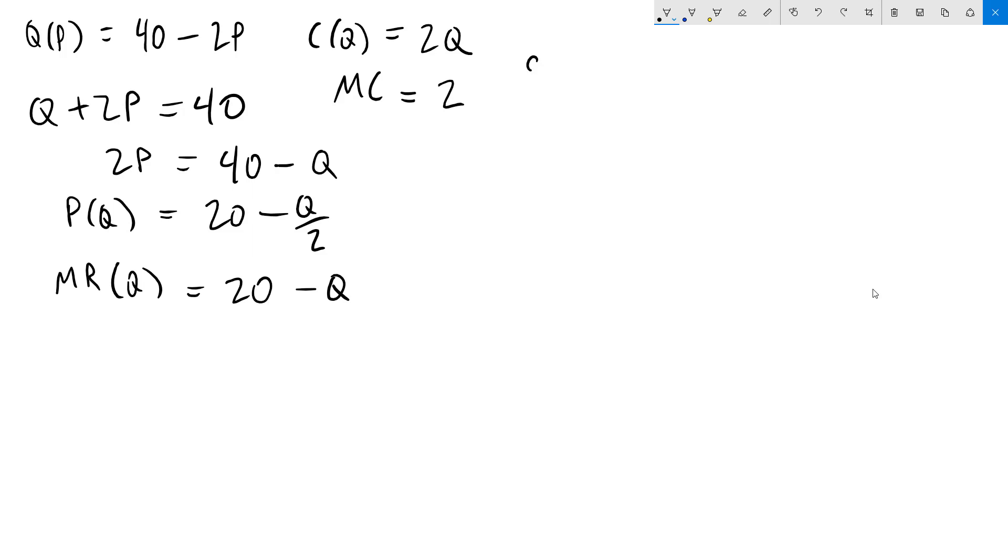Let's start with part A where we are going to do the basic monopoly pricing. For that we're going to set marginal cost equal to marginal revenue. So we're going to get 2 equals 20 minus q. Solve for q by adding that to both sides and subtracting 2 from both sides and we get 18. Plug this into the inverse demand function to get our price. We get p equals 20 minus 18 over 2, which is 9, so we're going to get a price of 11.